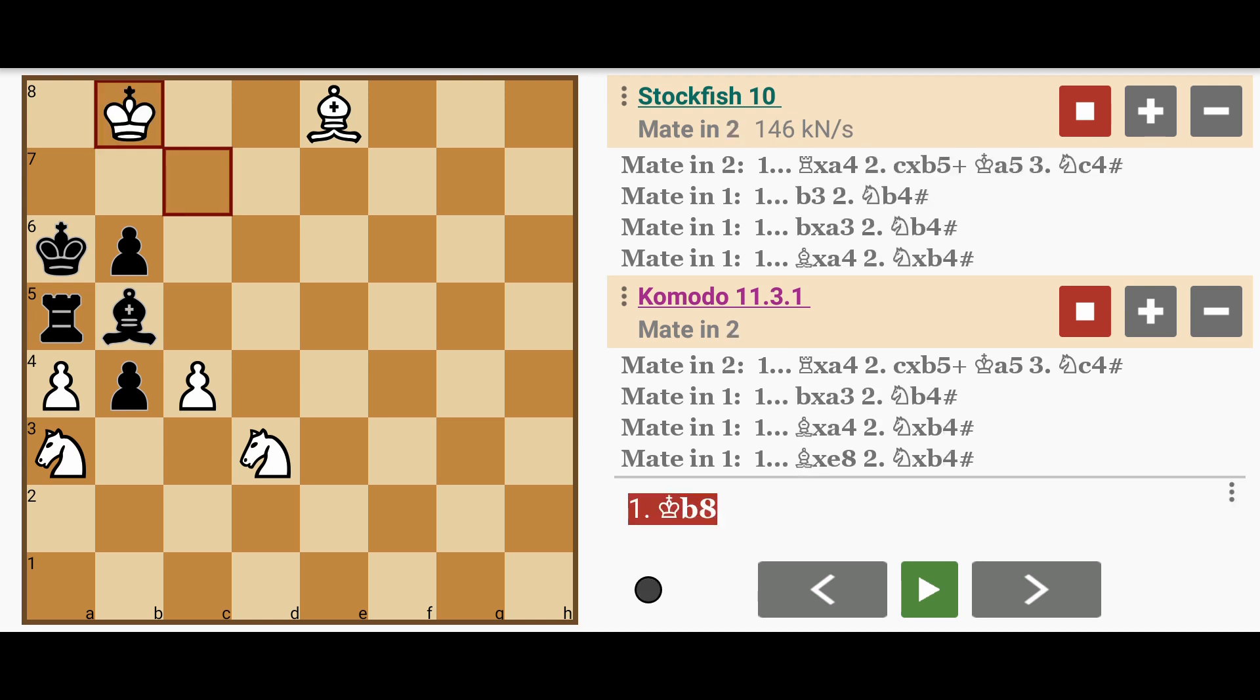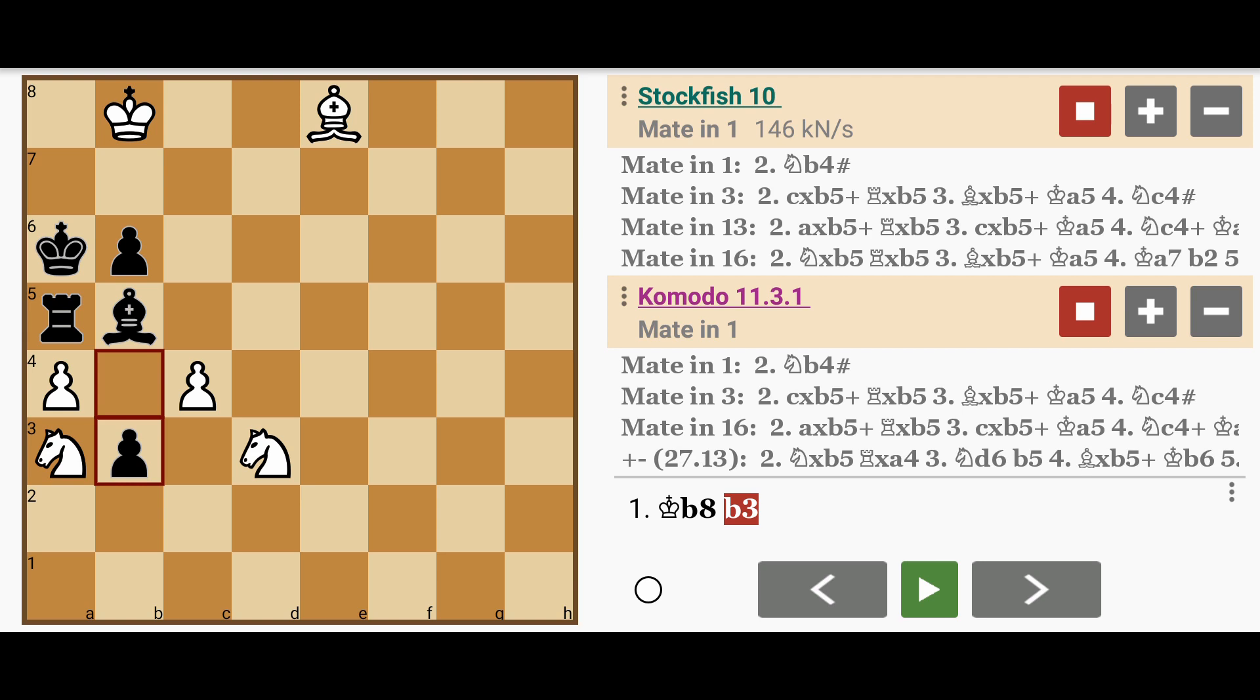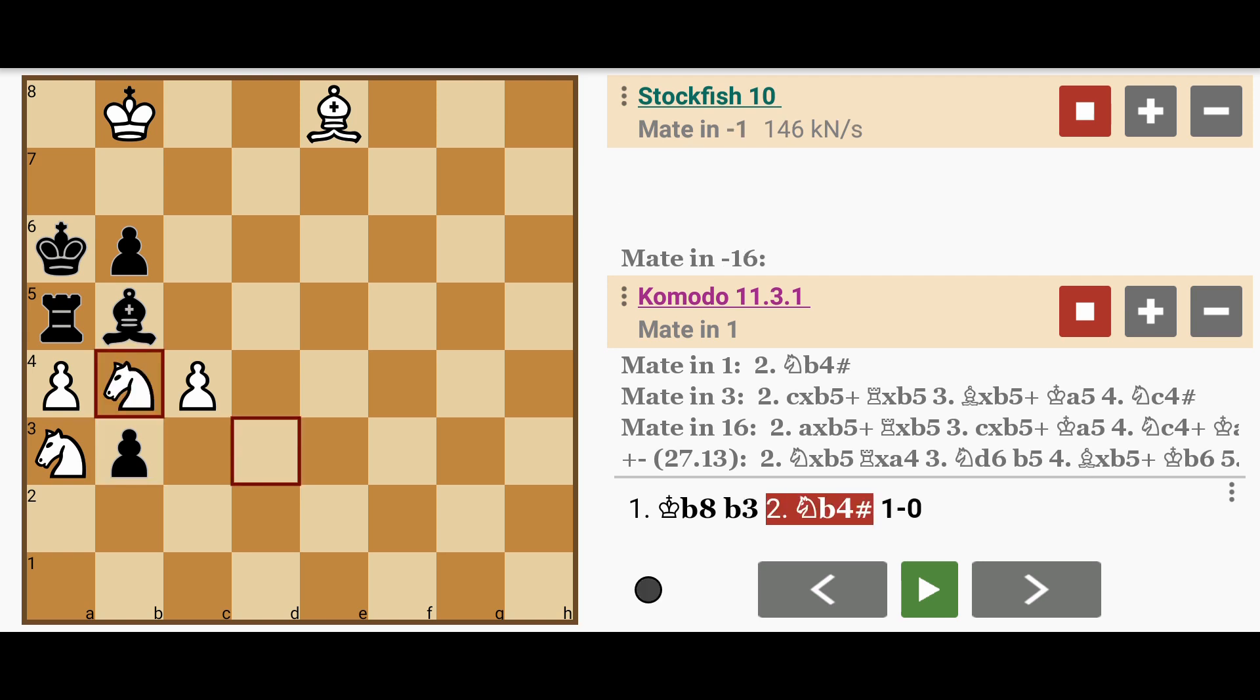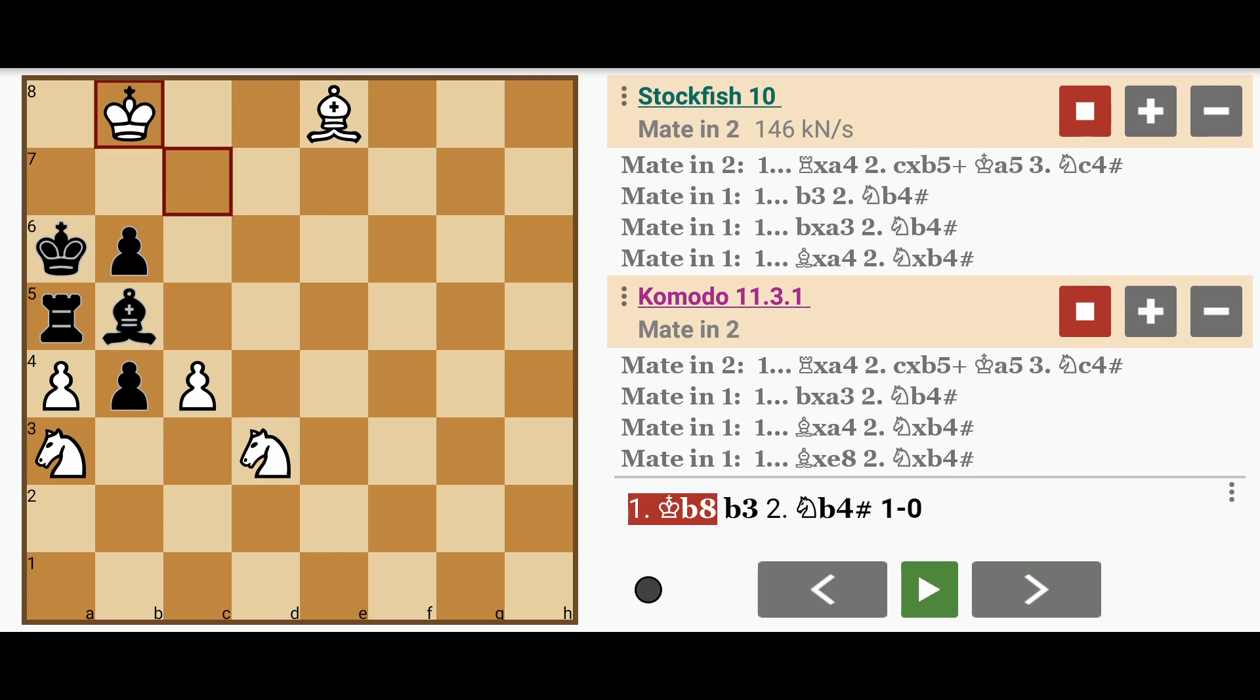Now the reason this works is because this blocks the king's escape square to a7, and there's really nothing much that black can do about it. If black were to try some alternative like b3, well then white wins immediately with Knight to b4. That's basically the plan here. The threat is to play Knight to b4 or Knight captures b4.